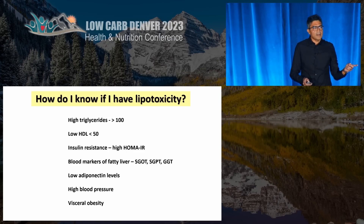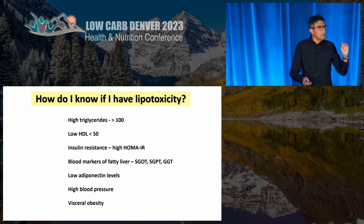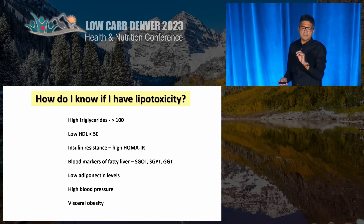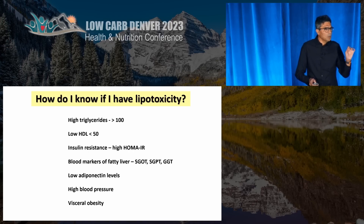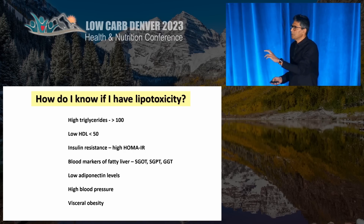A clinician can recognize this by looking at high triglycerides — I say 300 is too big a number, it should be less than 100 — low HDL, markers of insulin resistance, blood markers of liver dysfunction, low levels of adiponectin (a hormone that healthy fat cells elaborate), high blood pressure, and visceral obesity.